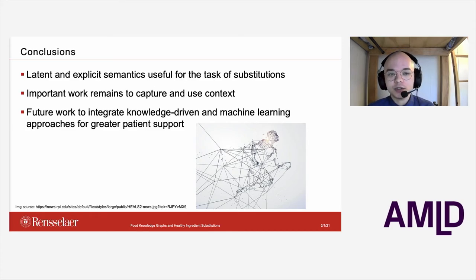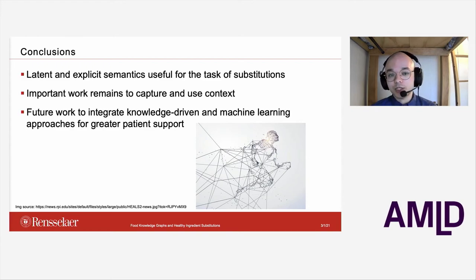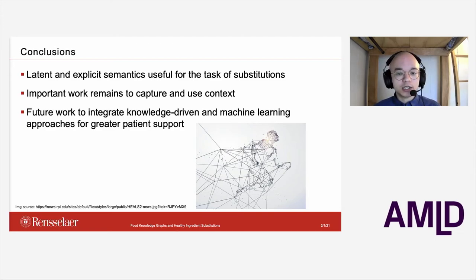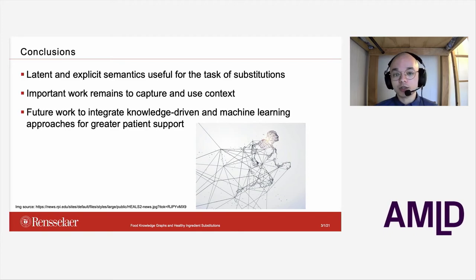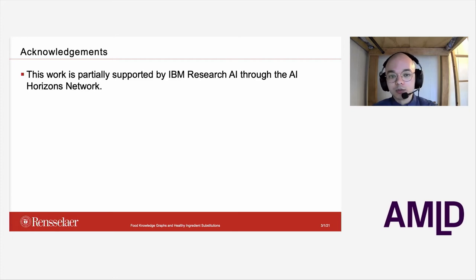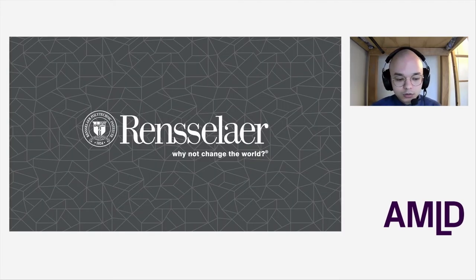In conclusion, with our work for identifying ingredient substitutions, we were able to see that the use of both latent and explicit semantics about ingredients — from word embedding models as well as a knowledge graph capturing nutrition and classification information — were both very useful for the task. With that said, there is a large amount of important work remaining to capture aspects about health, context, and what constitutes a good substitution. We're hoping for success in future work integrating these methods with knowledge-driven and machine learning approaches together to provide greater patient support to improve user health more generally. This work was partially supported by IBM Research AI through the AI Horizons Network.